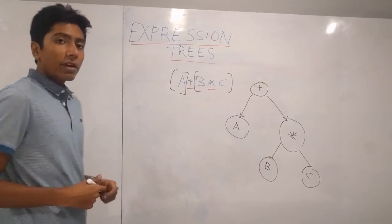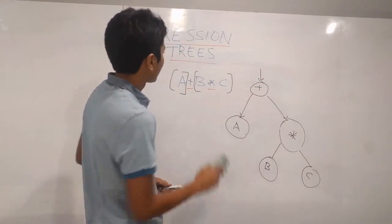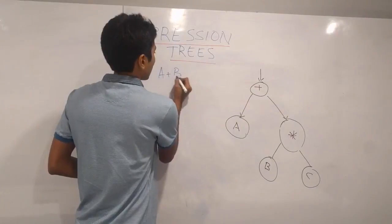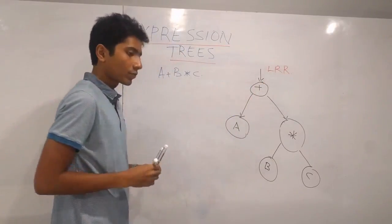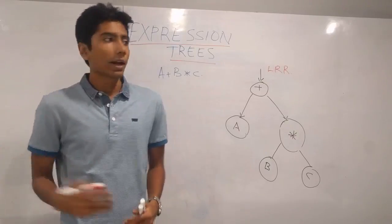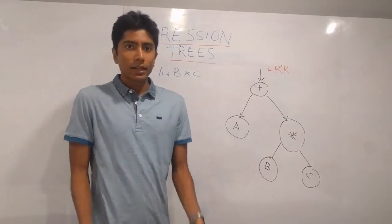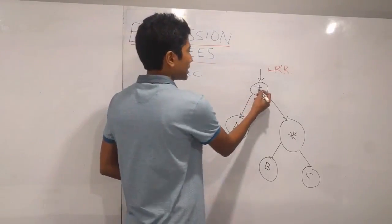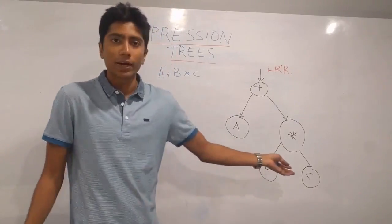Now the way we are going to evaluate this expression is by first going to the root and following a policy called left-root-right. First go to the left child, then go to the root, and then go to the right. Evaluate the left child first, then the root, and then the right child. We come here, we see that there's a plus — plus cannot be evaluated yet. So we'll be going down the tree till we hit operands. That's how our expression tree is defined: operands at the end, in leaf nodes.